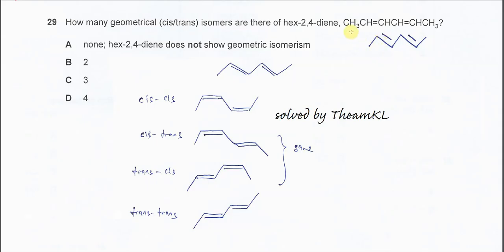So for this hex-2,4-diene, the skeleton formula is something like this — one, two, three, four, five, six carbons. The double bonds are here, right on the second and the fourth carbon. So this again is the hex-2,4-diene.